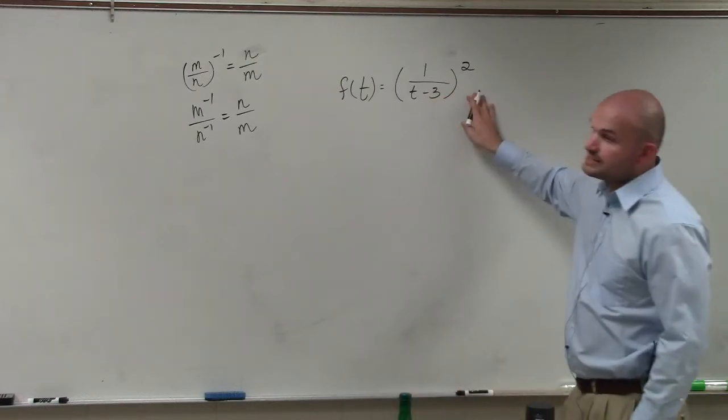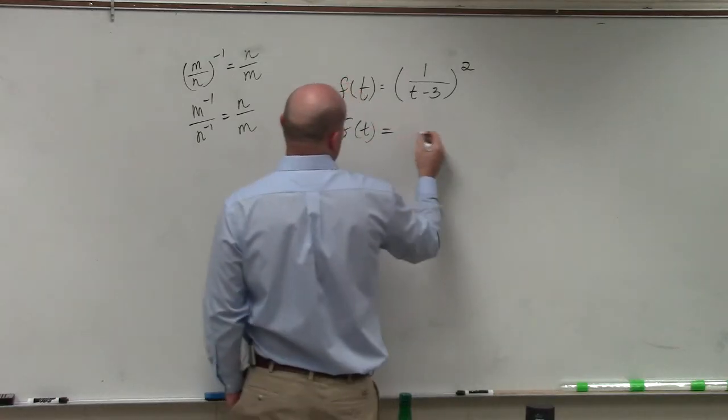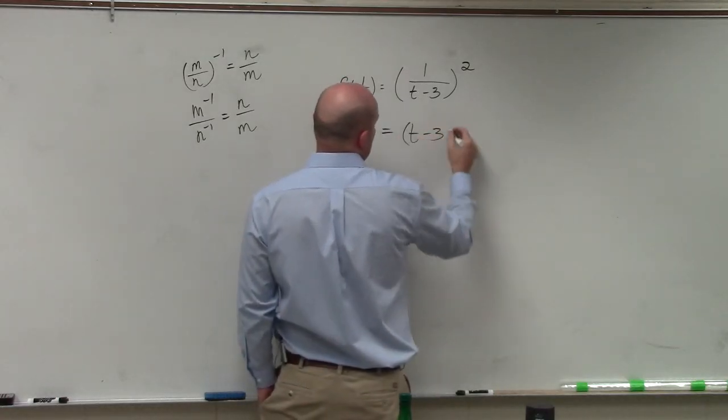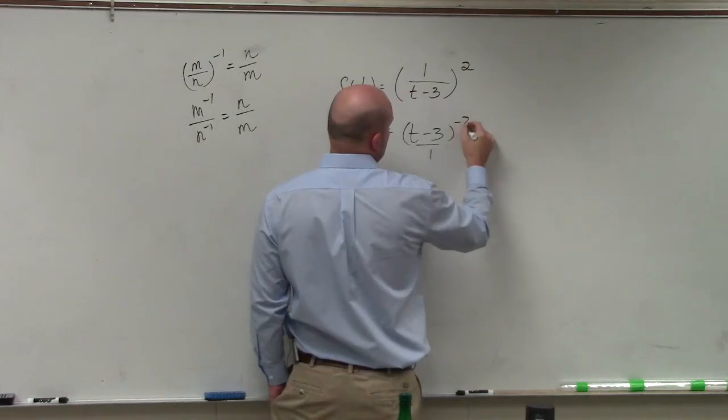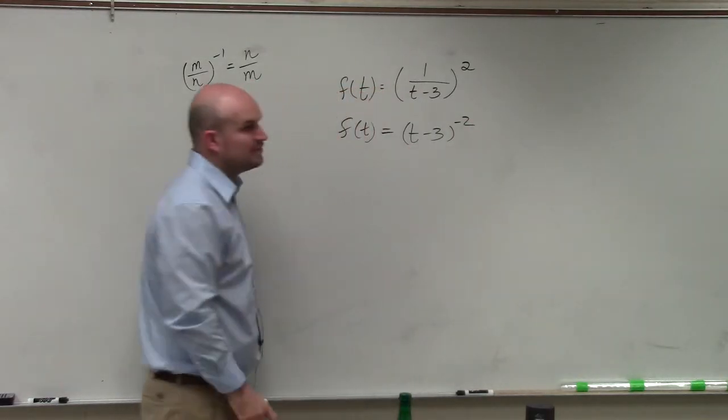So what we can do in this case is I can rewrite this as a negative exponent. f of t equals t minus 3 - you could put it over 1 to the negative 2nd power, but we really don't need to put the over 1, so we're going to just place it in there.